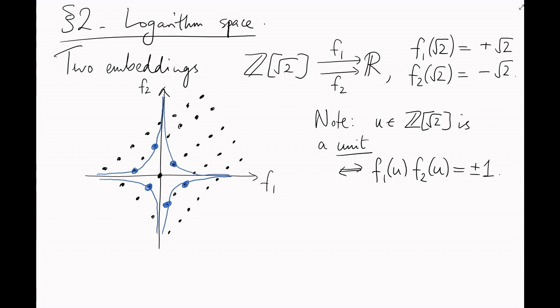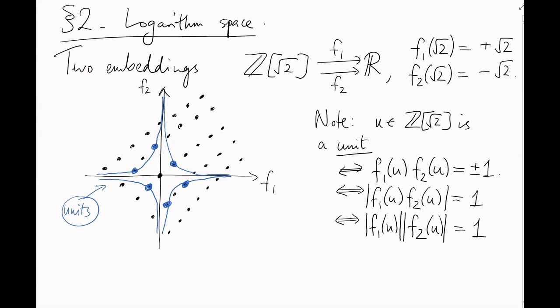Okay, to make the next step easier, I'm going to take the absolute value of both sides. I'll rewrite this as mod f1 of u times f2 of u equals 1. Then I'll split up the mod sign. Mod f1 of u times mod f2 of u equals 1.